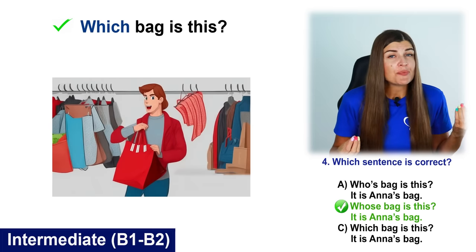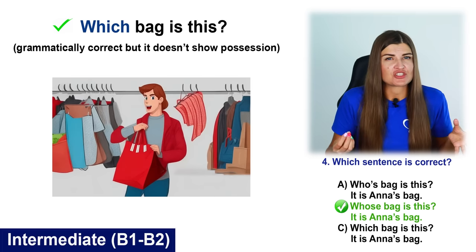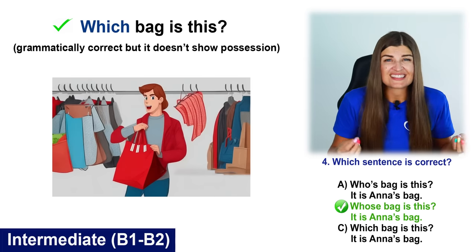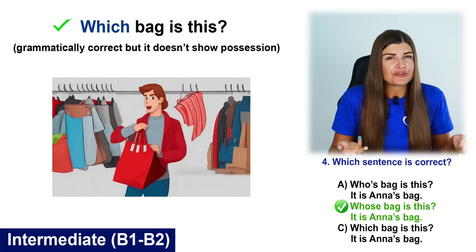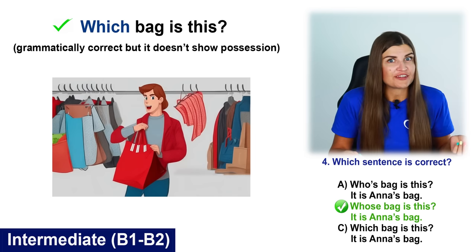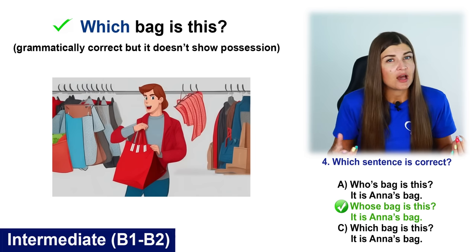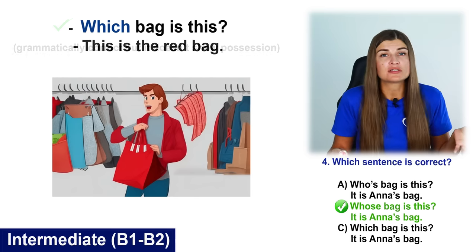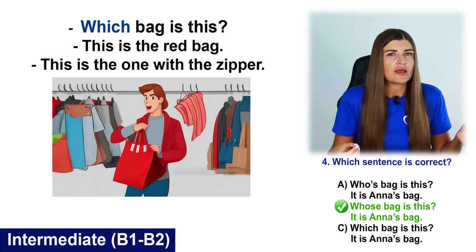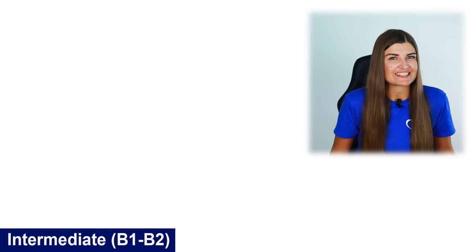The question which bag is this is grammatically correct, but it doesn't show possession, so in this context it's not correct. Imagine you are in a room with three bags and someone is holding one of them. You are curious to know which bag they have, so you ask which bag is this? The person can respond: this is the red bag or this is the one with the zipper.